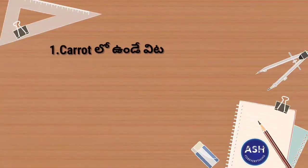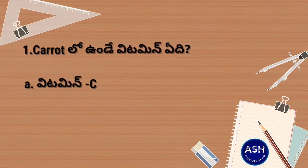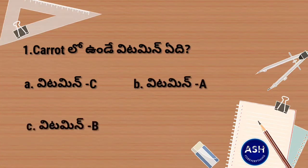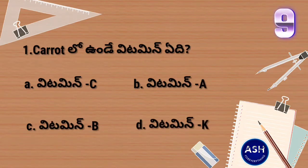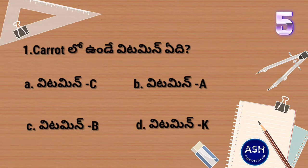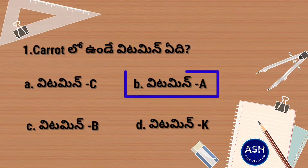There is vitamin A in the carrot. Option A: vitamin C. Option B: vitamin A. Option C: vitamin B. Option D: vitamin K. Your time starts now. And the answer is option B, vitamin A.